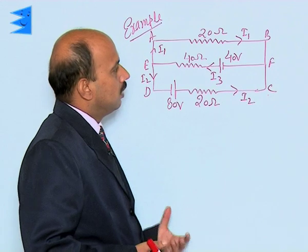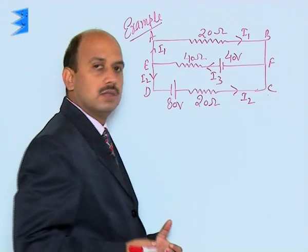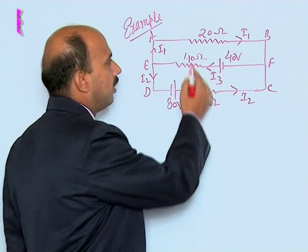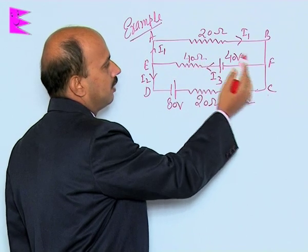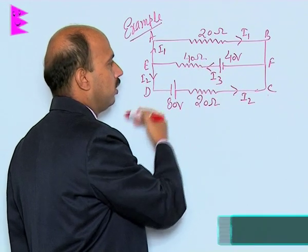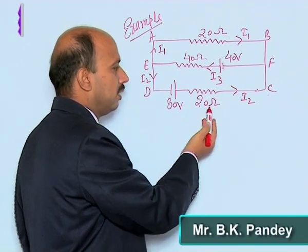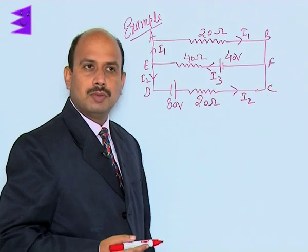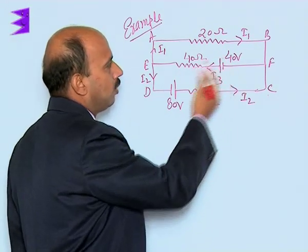Now, see here in this question you have to find the current I1. Here this is the circuit: 20 ohm resistance, then the battery of 40 volt, 40 ohm resistance, 80 volt battery cell, and a 20 ohm resistance. We have to calculate I1.